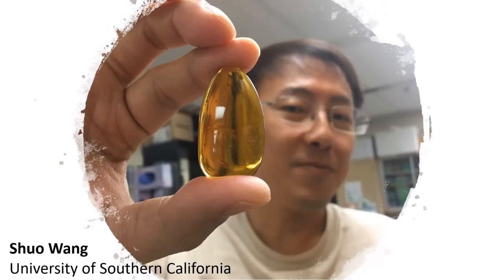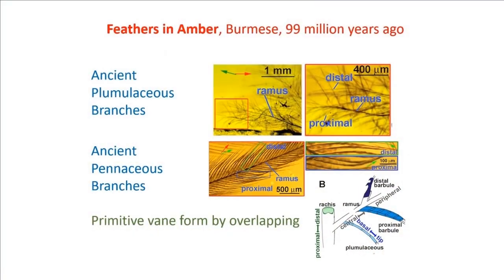How is the feather in dinosaurs? Cretaceous feathers embedded in Burmese amber have barbules with no shape difference between proximal and distal barbules, and there is no sign of hooklets. This indicates early feather vanes were formed through overlap of proximal and distal barbules, and the modern feather vane configuration formed by hooklets may have evolved later.